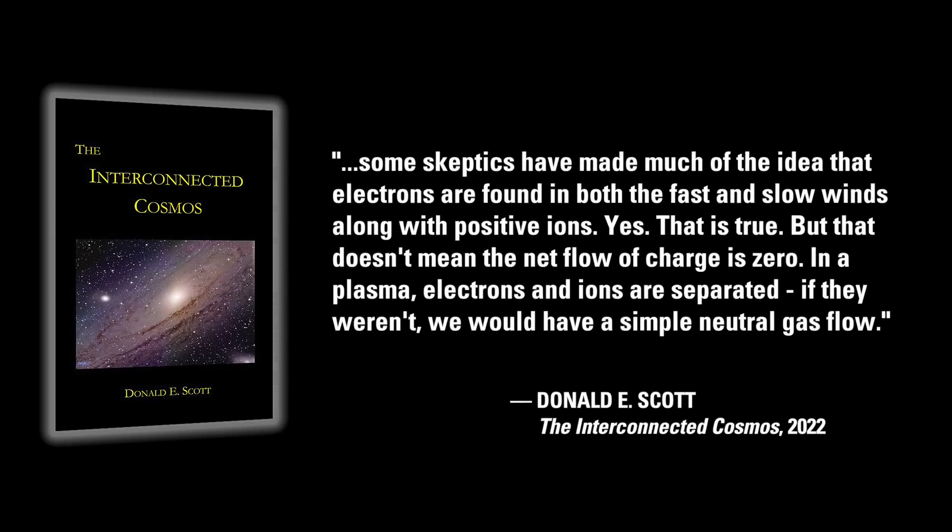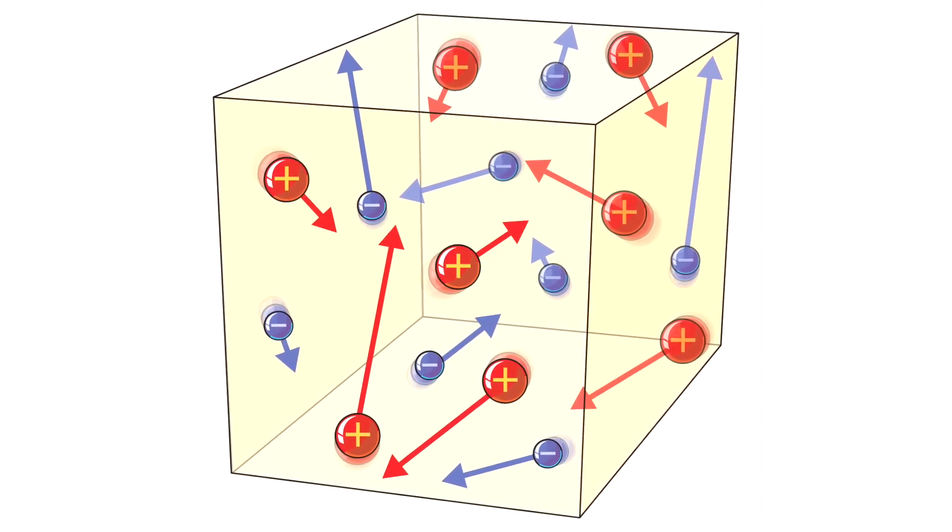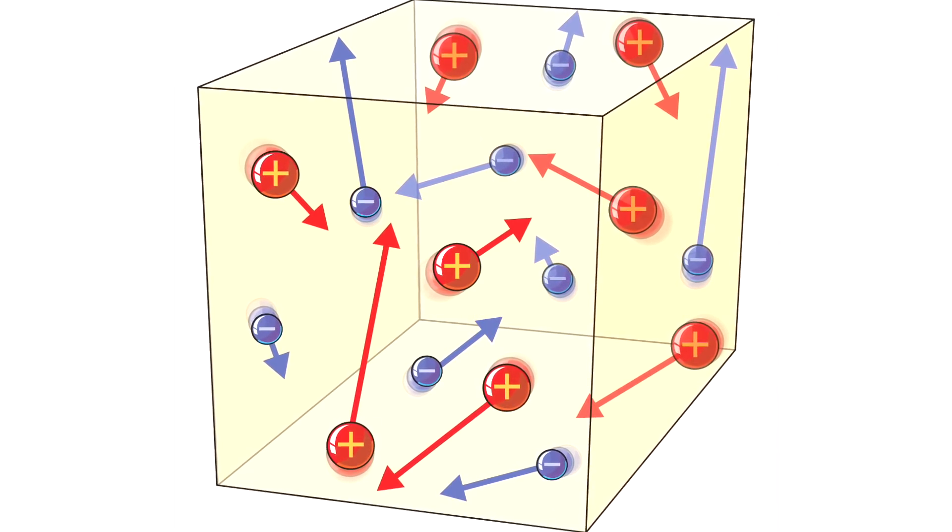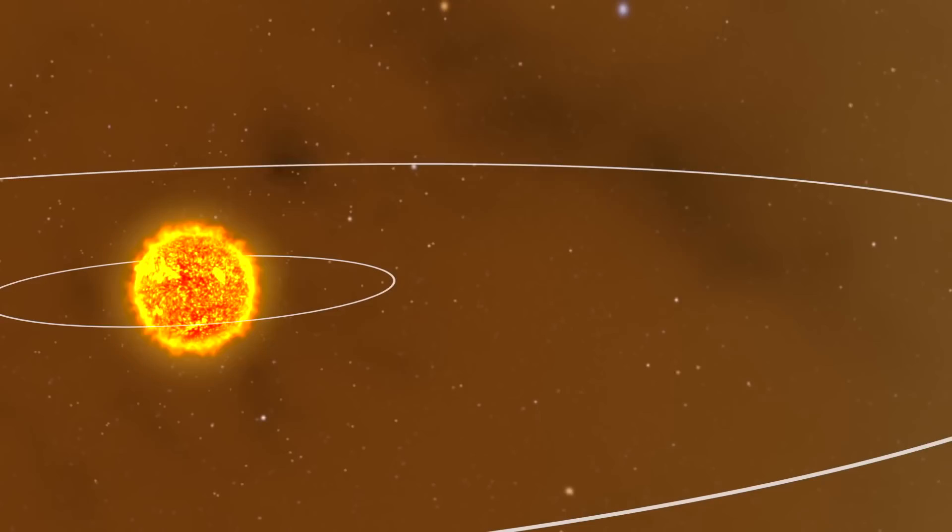In my book I point out that some skeptics have made much of the idea that electrons are found in both the fast and slow solar winds along with positive ions. Yes, that's true, but it doesn't mean that the net flow of charge is zero. In a plasma, electrons and ions are separated. If they weren't, we would have a simple neutral gas flow.